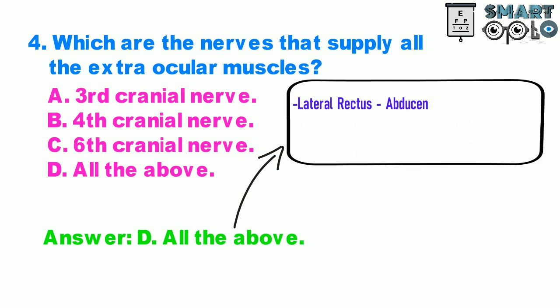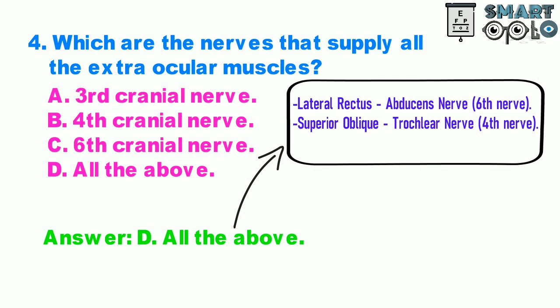Lateral rectus muscle is supplied by the abducens nerve, the sixth nerve. Superior oblique is supplied by the trochlear nerve, i.e. the fourth nerve. And the rest of all the muscles are supplied by the ocular motor nerve.